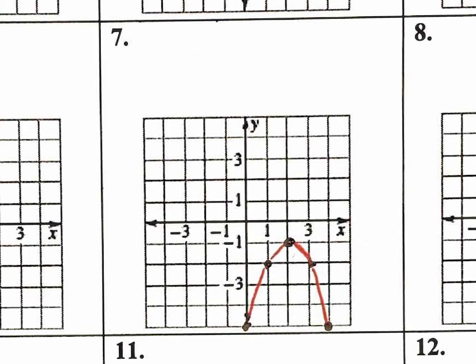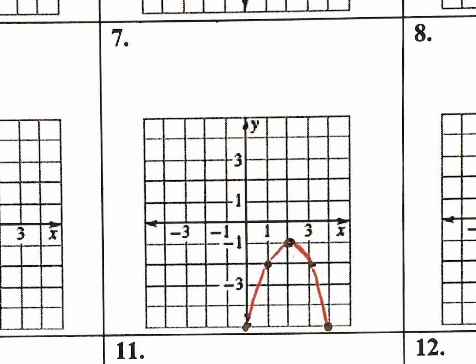Let's take a look at this one. This one's the easiest one because when we write the equation, we want y equals a times (x minus h) squared plus k. So when we look at the a value, is this going to be a positive a or a negative a? Obviously a negative a.